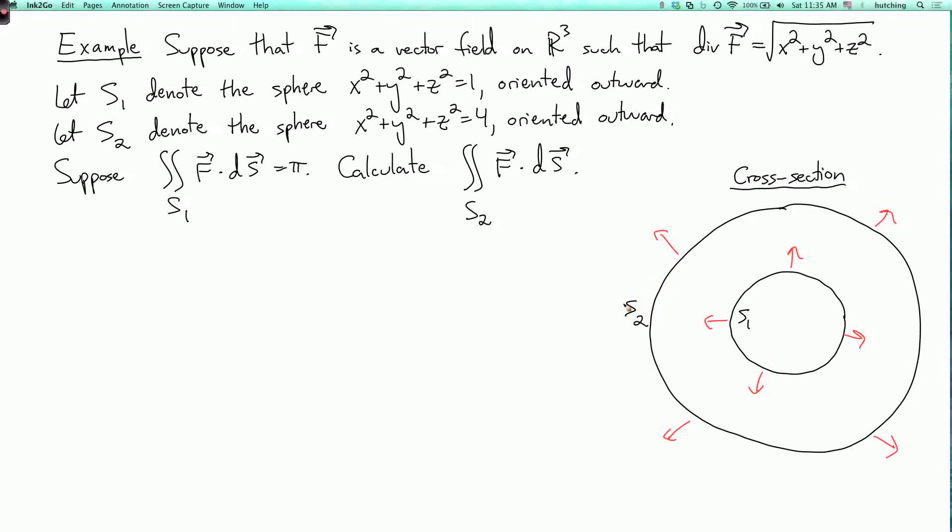Now, the divergence theorem tells me that if I have a solid three-dimensional region, then the net flux over the boundary is equal to the integral of the divergence over the interior. So I need to find a solid region to use, and I want to relate the flux over S1 to the flux over S2. So why don't I take my solid region to be the solid region that's in between the two surfaces? So this will be our region E.